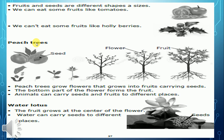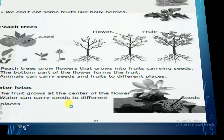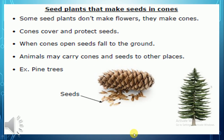If we look at another page — this is page 37 in the booklet — fruits and seeds are different shapes and sizes. Some fruits you can eat, like tomato, and some fruits you cannot eat, like holy berry. The peach tree has seeds inside fruits. If those seeds are grown, they grow to give us a new peach tree, and the new peach tree makes flowers, flowers make fruits, and seeds are inside the fruits. We also talk about plants that make cones, like the pine tree. Pine cone seeds — it's called an acorn.